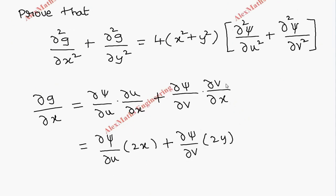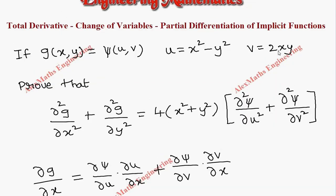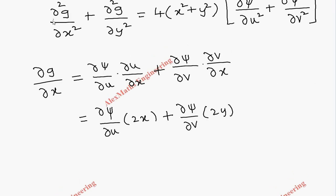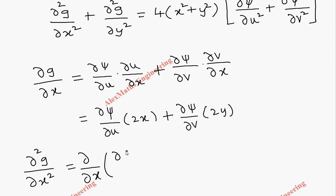Since we are doing the partial derivative of v with respect to x, the constant 2y is written as it is and x derivative is 1, giving 2x. So we have substituted ∂u/∂x and ∂v/∂x. Now we need the second derivative ∂²g/∂x², which is ∂/∂x of ∂g/∂x.